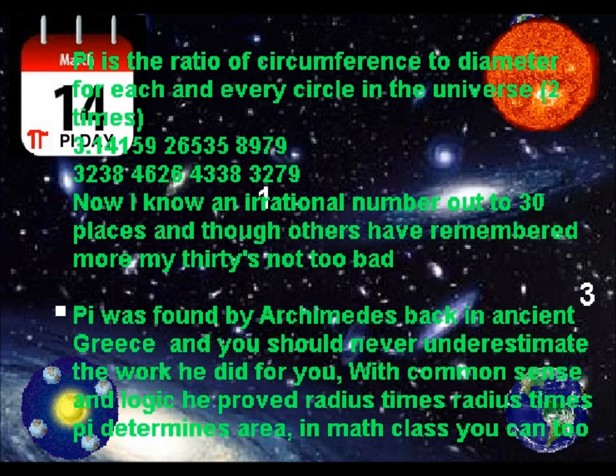Pi is the ratio of circumference to diameter, for each and every circle in the universe, reaching every circle in the universe.